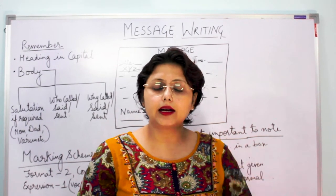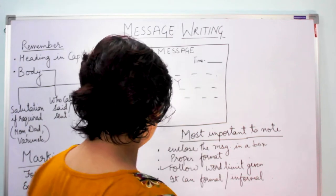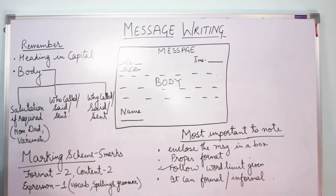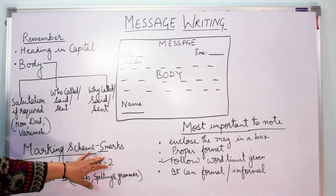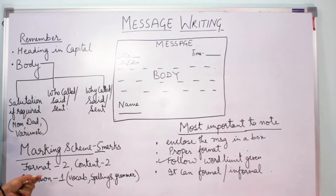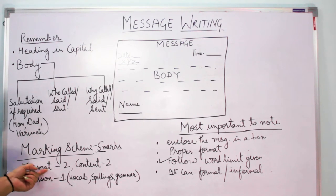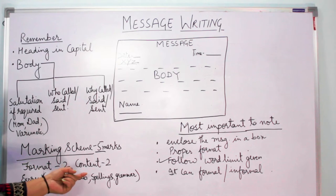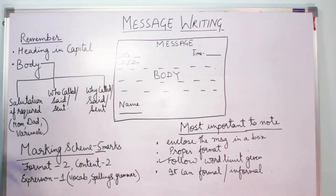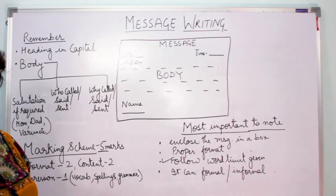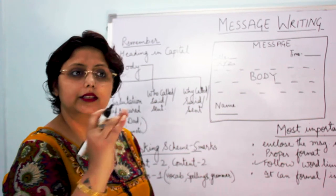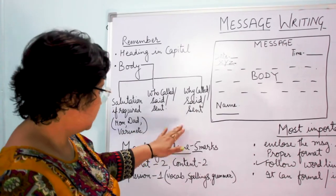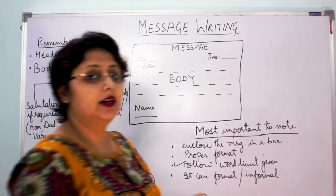Now let us look at the marking scheme for message writing. Message writing can be of five marks or four marks. For five marks, the breakdown is: formatting carries two marks, content — meaning the body — carries two marks, and expression carries one mark. Expression refers to the vocabulary you have used, spelling errors, and grammatical errors — all these things are counted under expression.